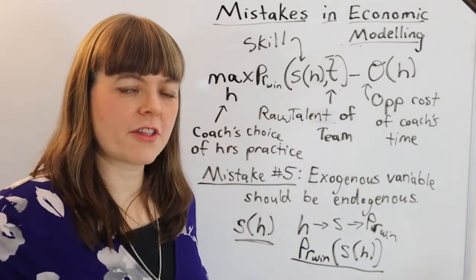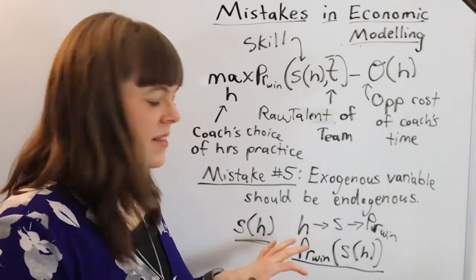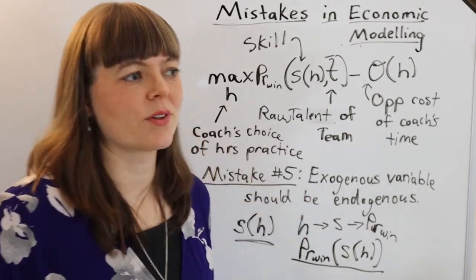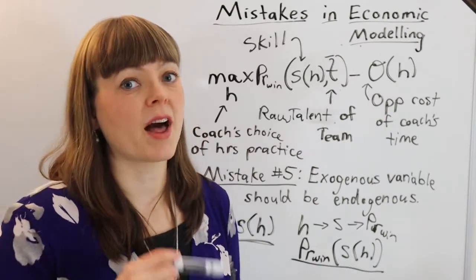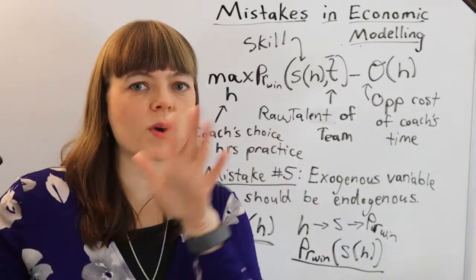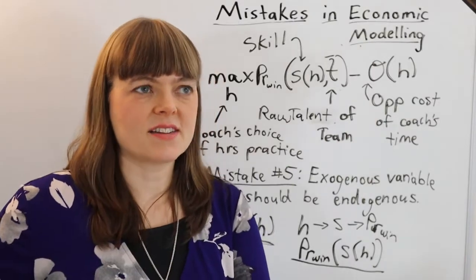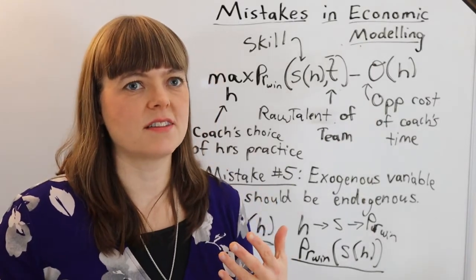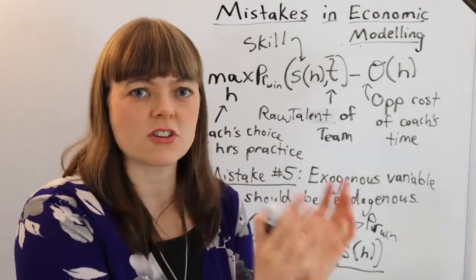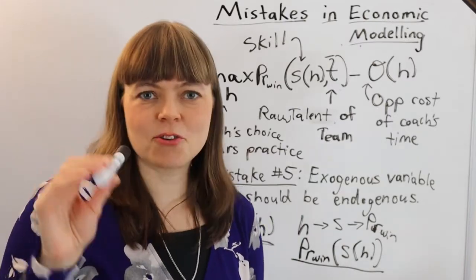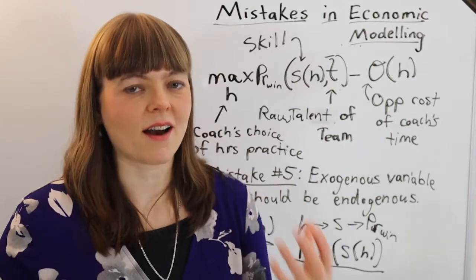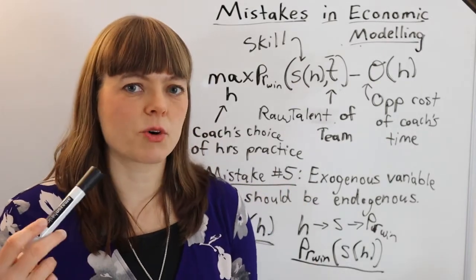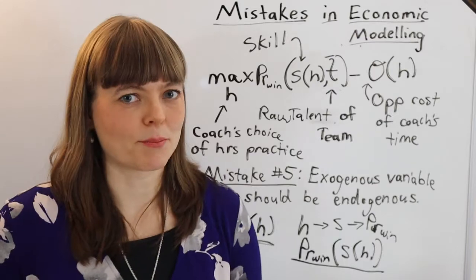Now there's one other thing that could be going on and I'll explain this and then I'll do a different example that'll walk you through it. And that is, sometimes you're intentionally making a variable exogenous because you want to quiet that as one of the reasons that you're looking at. You want to focus on something else. And if you can understand this, you're going to have a much deeper understanding of what economists are doing when we're building our models. So let me give you an example.